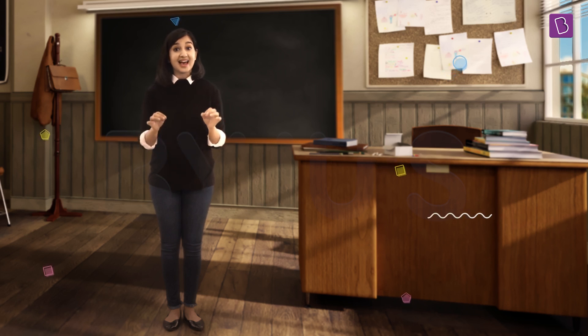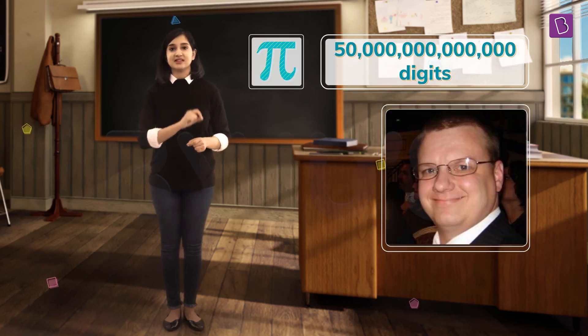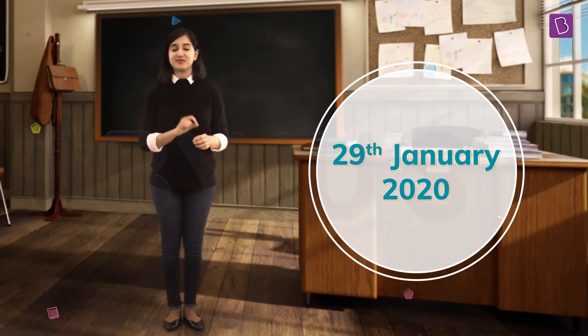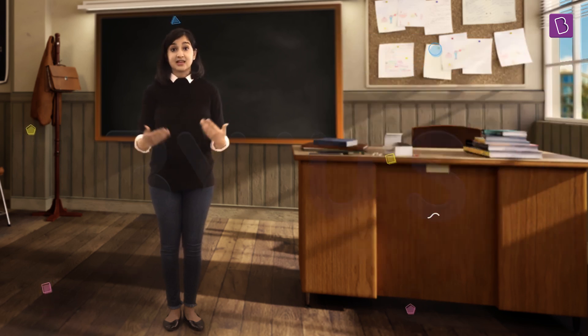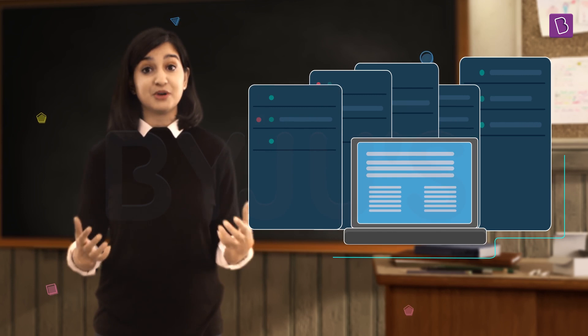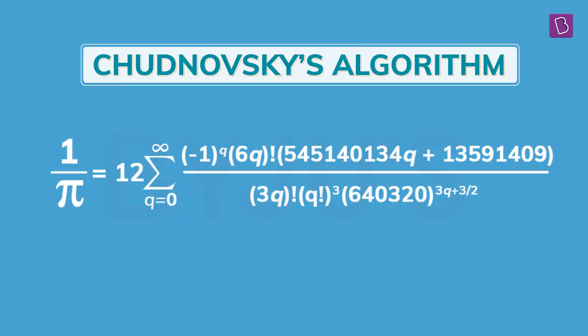The most accurate value of pi to 50 trillion digits was achieved by Timothy Mulliken in Alabama, USA, on 29th January 2020. He did it by running computer programs on enterprise grade compute and storage equipment, using the Chudnovsky algorithm.